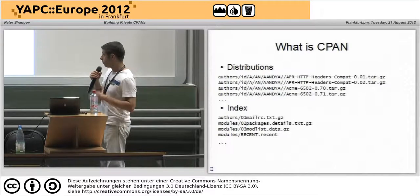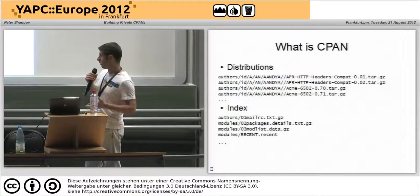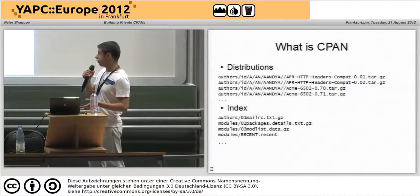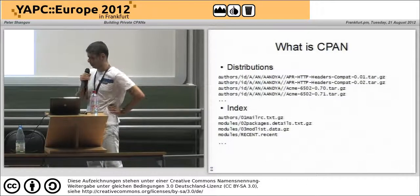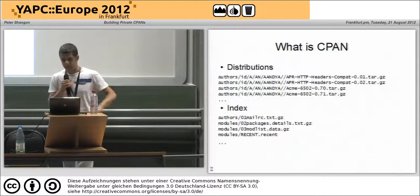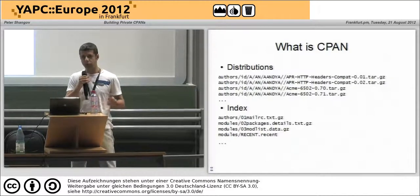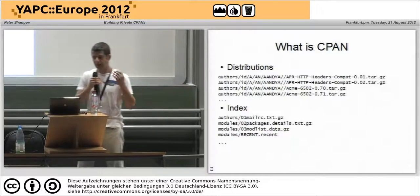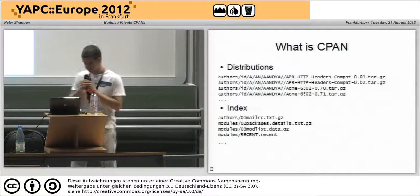Basically, a CPAN repository is a bunch of distributions and then some kind of index that provides additional information about those distributions — such as where they are, what their names and versions are, what packages they provide, and so on. That's everything a normal CPAN client needs to know to go to your repository, ask questions about it, and install whatever it needs.